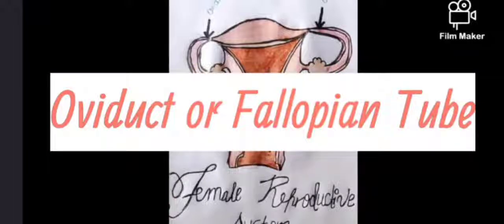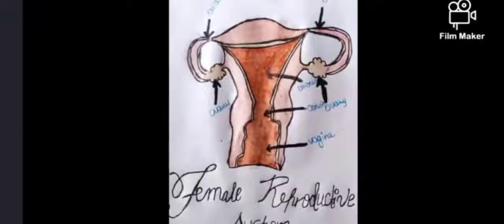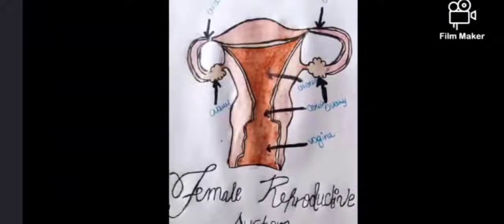The next organ is the oviduct, also known as the fallopian tube. It is a pair of tubes about 12 cm in length.